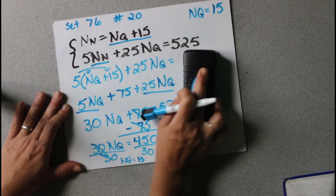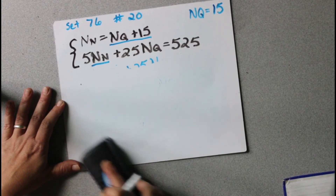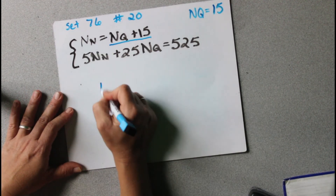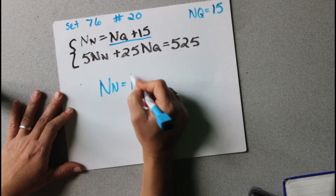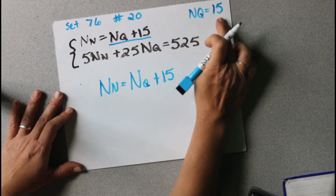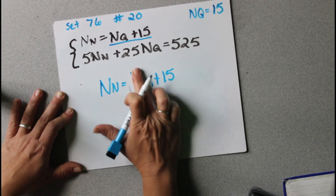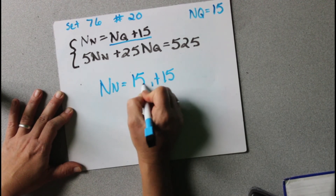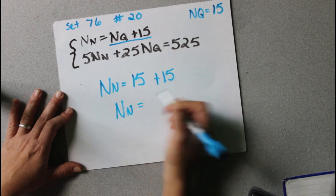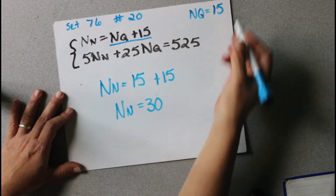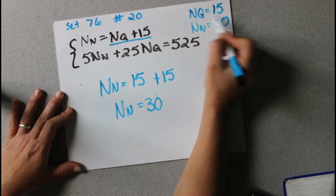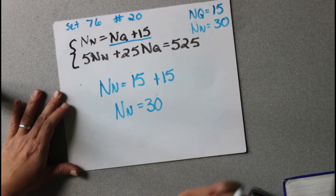So now we're not done yet. We have to solve for nn. Up here it says nn equals nq plus 15. Well, we know that nq is 15, so we're going to replace that with 15. And we get nn equals 15 plus 15, so that means it equals 30. So the answer is nq equals 15 and nn equals 30.